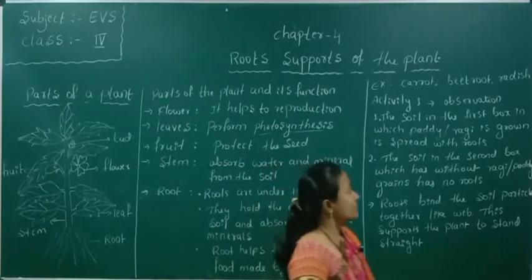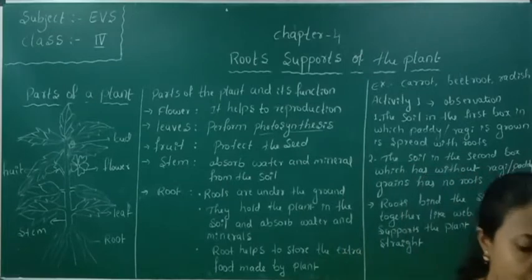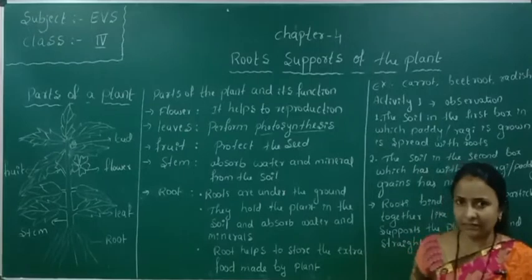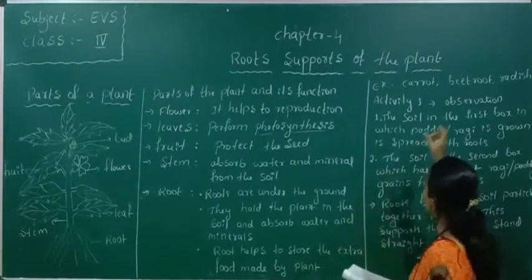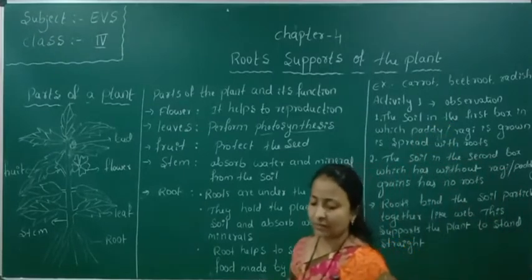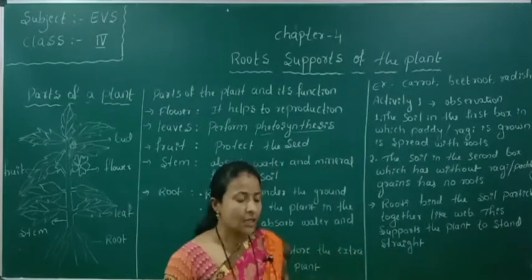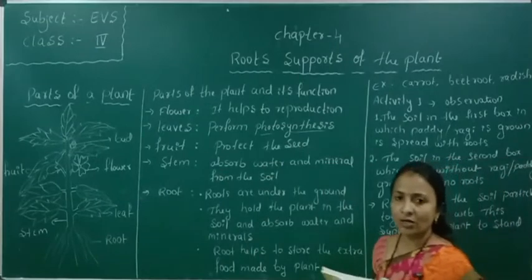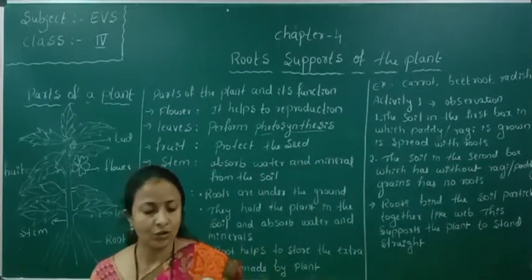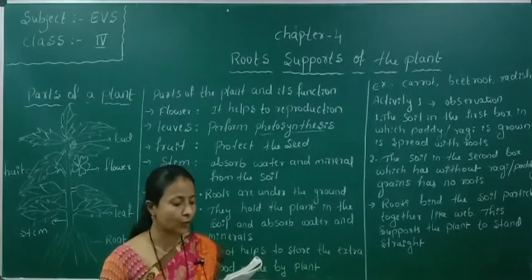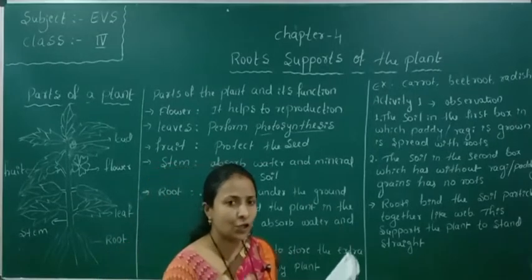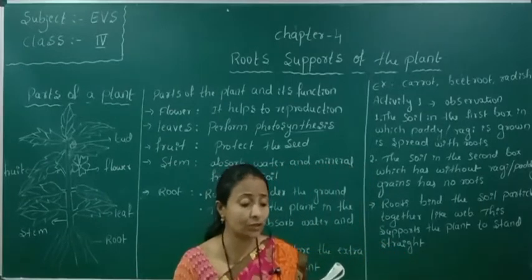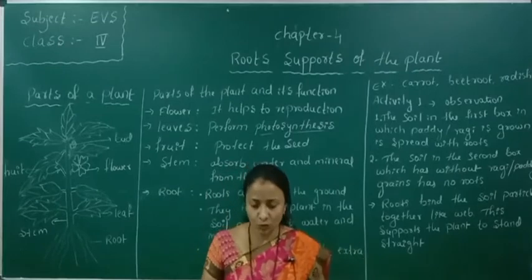Open your textbook to page number 30. There are some activities given there. Activity 1: Take two coconut shells or small tin boxes. Fill both of them with soil.